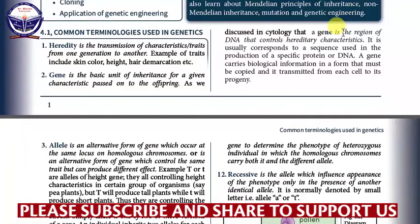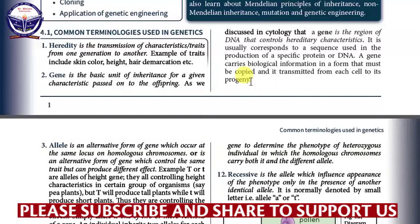So a gene is the piece of DNA, or the portion or region of DNA. It usually corresponds to a sequence used in the production of a specific protein. A gene carries biological information in a form that must be copied and transmitted from each cell to its progeny. So a gene carries hereditary information from parents to the offspring.